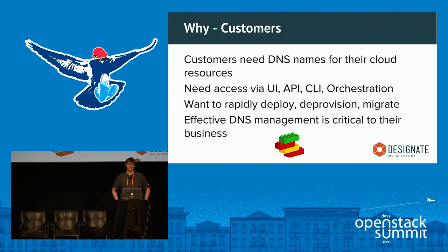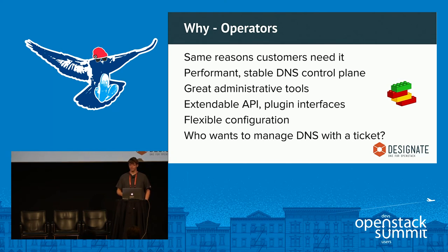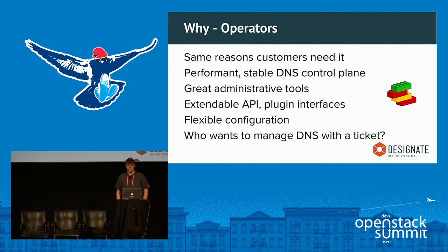Some customers will integrate DNS tightly into their business — giving every one of their customers a subdomain, for example. As the operator of this OpenStack cloud, you want it for all the same reasons. Good luck standing up an OpenStack cloud without being able to rapidly change DNS records. Designate is a simple, stable, performant control plane for managing DNS, which is super important.